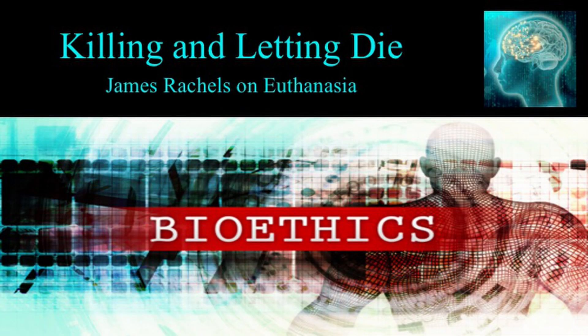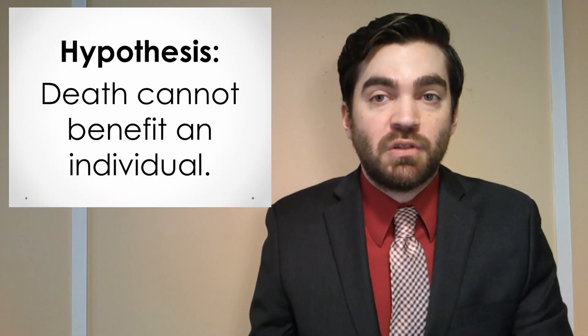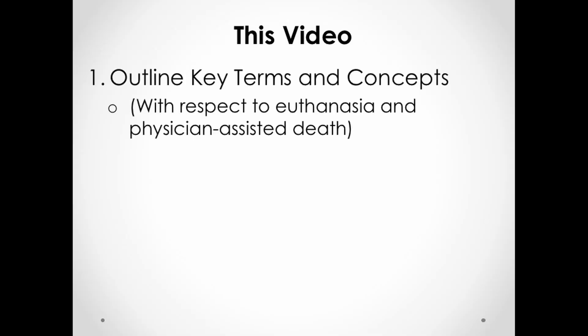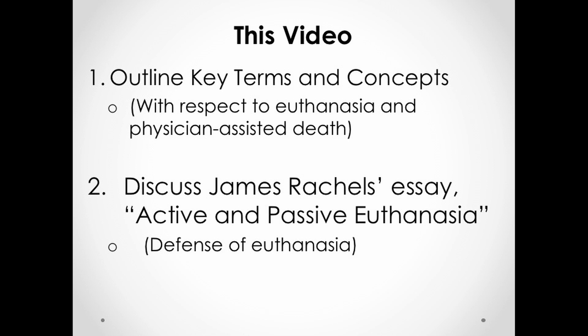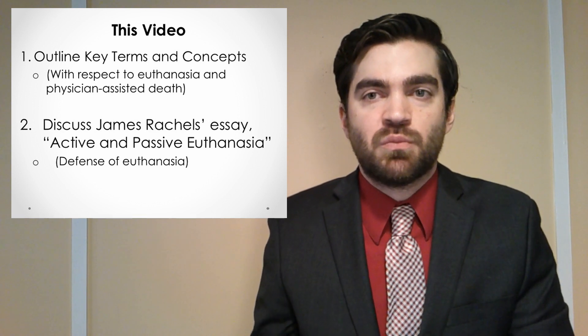In this video and the next, we're going to be talking about euthanasia. In the previous video, I raised questions about whether or not death could ever be a benefit to an individual, so we'll be looking into that question. For this particular video, I'll start off by outlining some key terms and concepts, and then I'm going to be talking mostly about an essay by James Rachels titled Active and Passive Euthanasia. Rachels takes a friendly view towards euthanasia — he thinks it's a practice that is morally permissible. In the next video, we're going to look at some criticisms of euthanasia more generally.